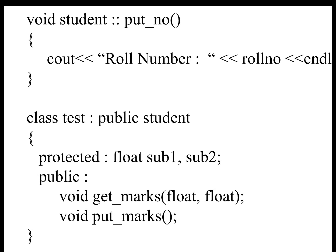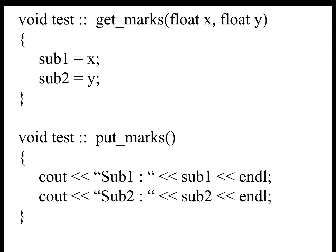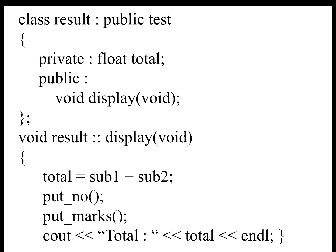Class Test is a derived class with Public Student as its base class. It has two protected members, subject1 and subject2, and member functions get marks and put marks. In get marks we read the marks of two subjects, and in put marks we display the marks of subject1 and subject2.